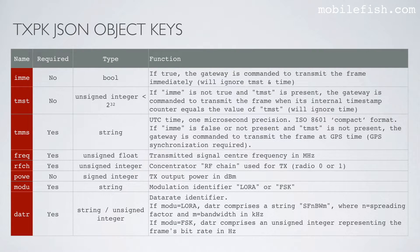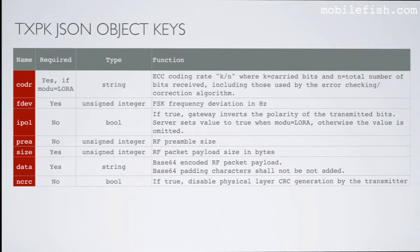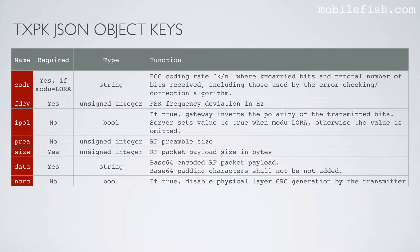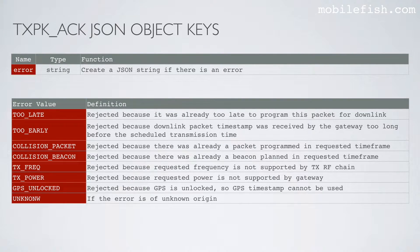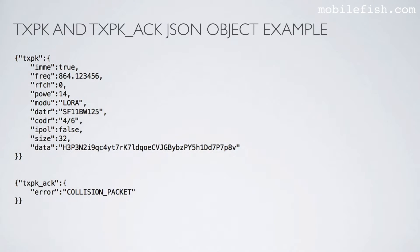Here are the transmit packet JSON object keys — I will not explain the function of these keys. Here are the transmit packet acknowledge JSON object keys. If there is an error, the JSON object will have an error key with one of several defined values. And here is the transmit packet and transmit packet acknowledge JSON object example.